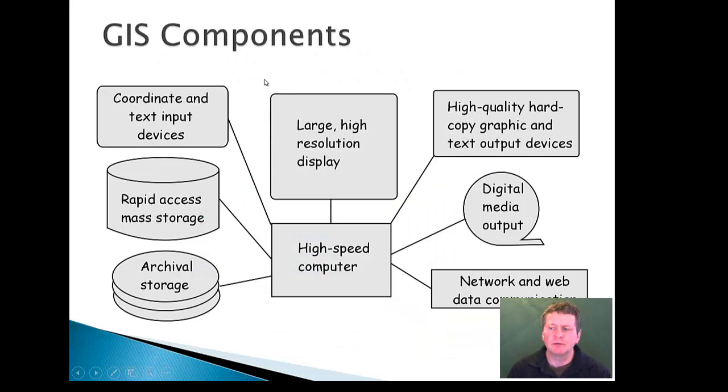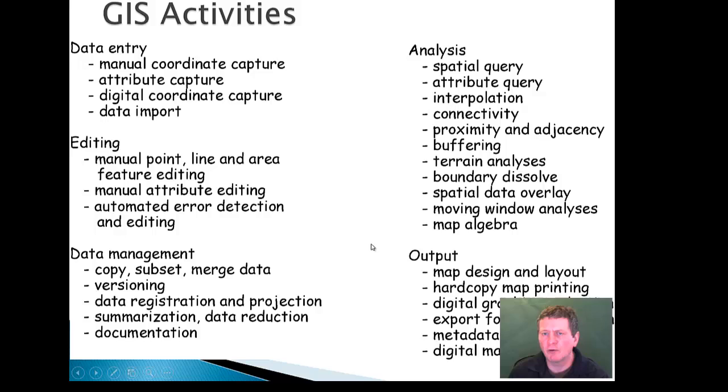So the components of the GIS include input devices, mass storage, rapid access, web access, and archival storage. They feed a computer which with most mapping you want a decent resolution display. Outputs are going to be high quality web or digital media.